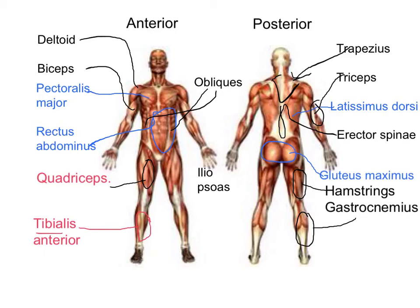Another muscle I want you to label is your iliopsoas muscle, which is in here. You might know it as your hip flexors. The iliopsoas muscle is responsible for flexion of the hips. It's a very powerful muscle and helps keep the femur and pelvis joints together. You use it when you're cycling, kicking, and running. It's spelled I-L-I-O-P-S-O-A-S — iliopsoas. So if you could mark that in please.